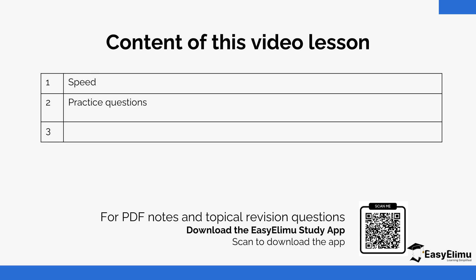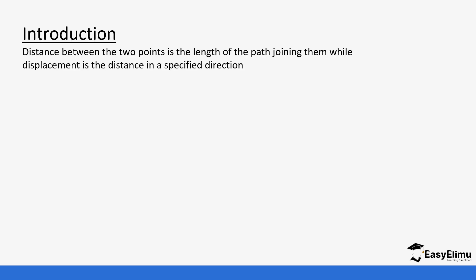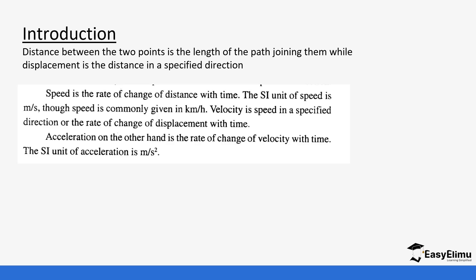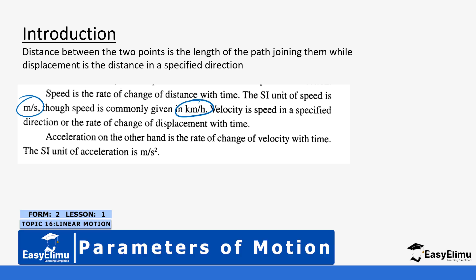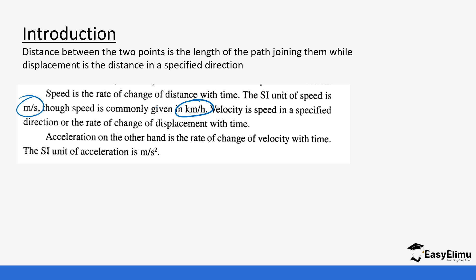Distance between two points is the length of the path joining them, while displacement is the distance in a specified direction. Speed is the rate of change of distance in relation to time. The SI unit is meters per second, although most questions are given in kilometers per hour, so you may be required to change from one unit to the other.